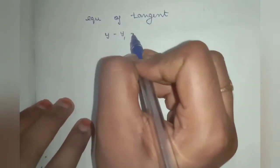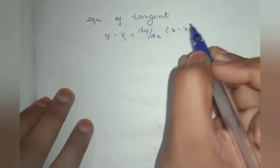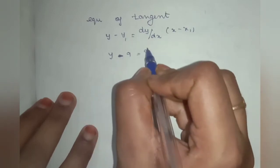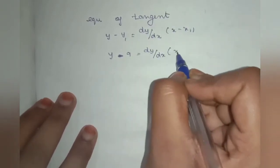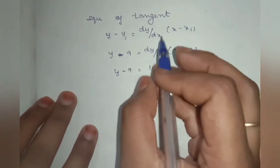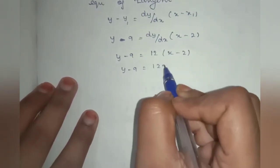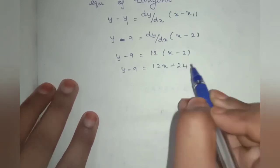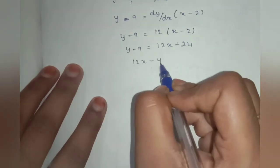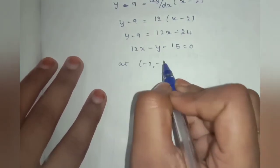Equation of tangent: y minus y1 = dy/dx times (x minus x1). Substituting y1 = 9, dy/dx = 12, x1 = 2: y minus 9 = 12(x minus 2), so y minus 9 = 12x minus 24, giving 12x minus y minus 15 = 0.